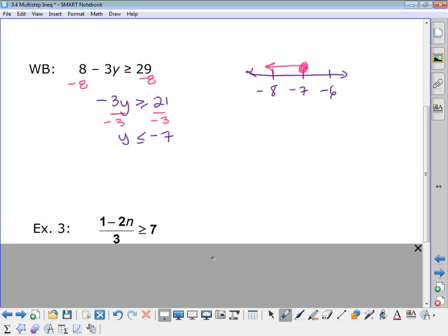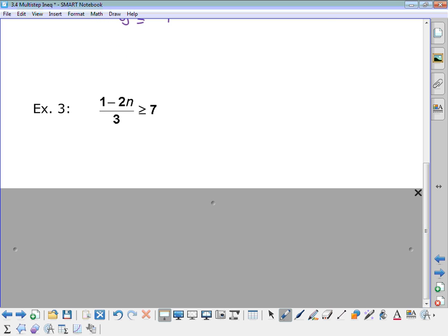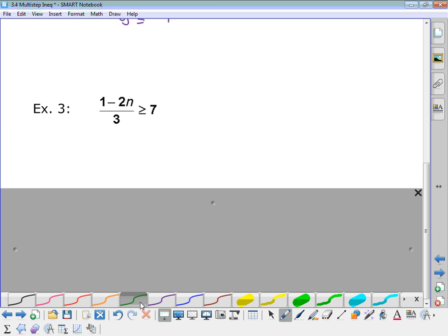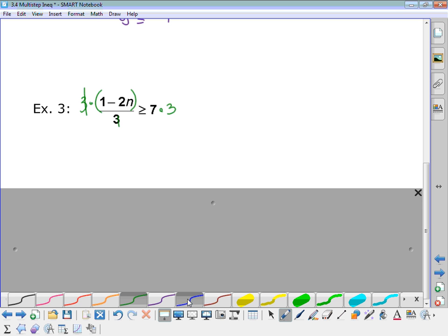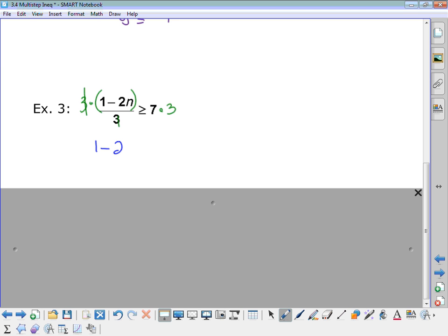All right, this one's for your notes. You want to remember that a fraction bar is a grouping symbol. So 1 minus 2n is a group that's being divided by 3. So the opposite of division is multiplication. So I'm going to multiply by 3 on both sides. That way the 3s cancel out on the left. And I'm left with just 1 minus 2n is greater than or equal to 21.